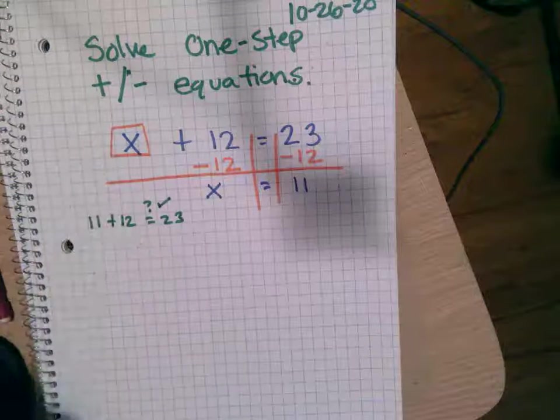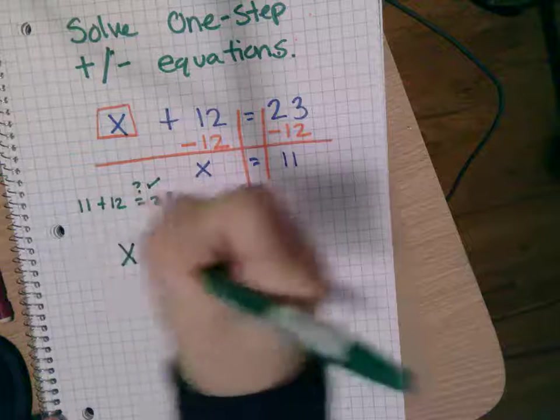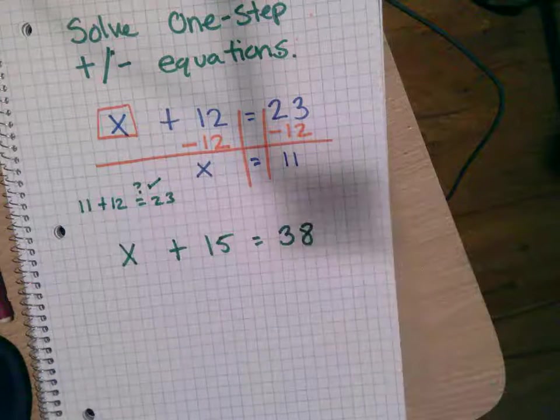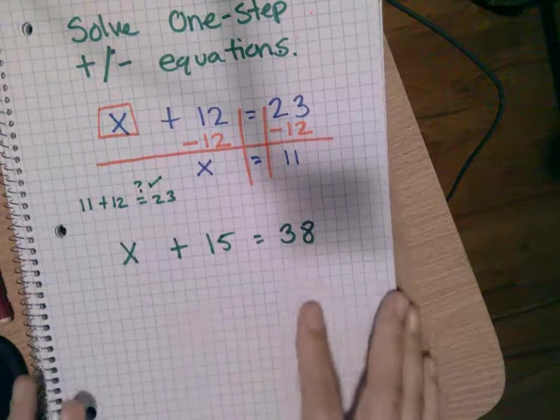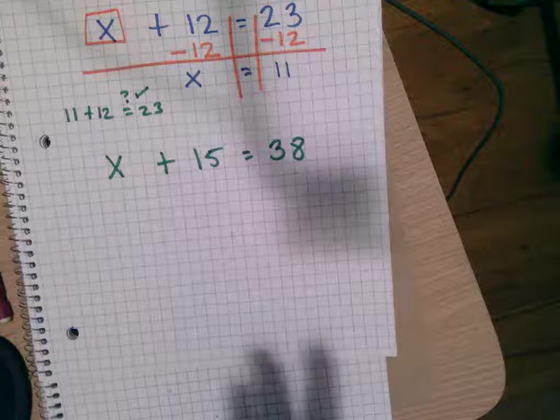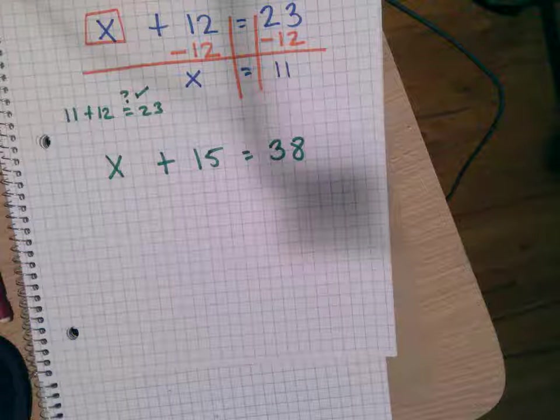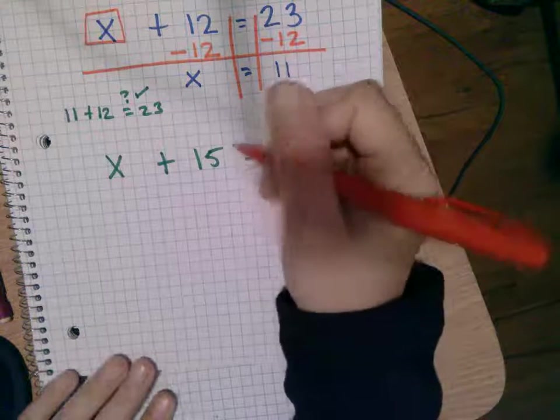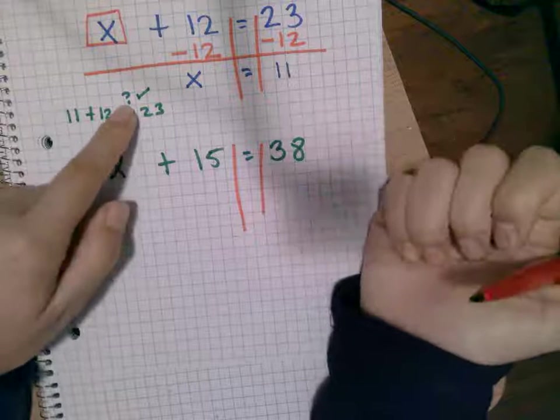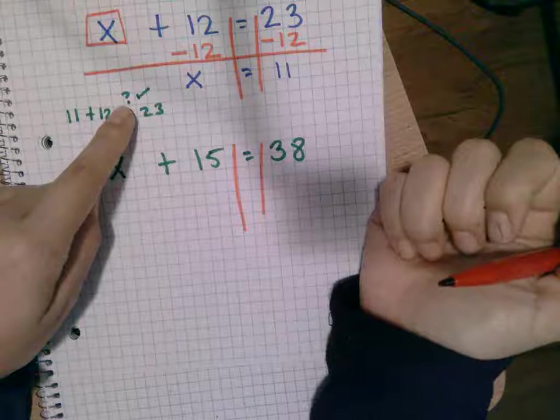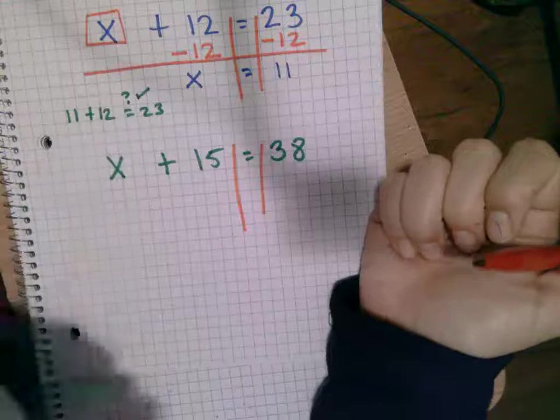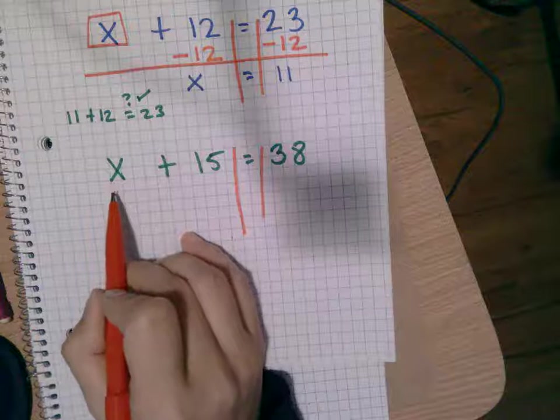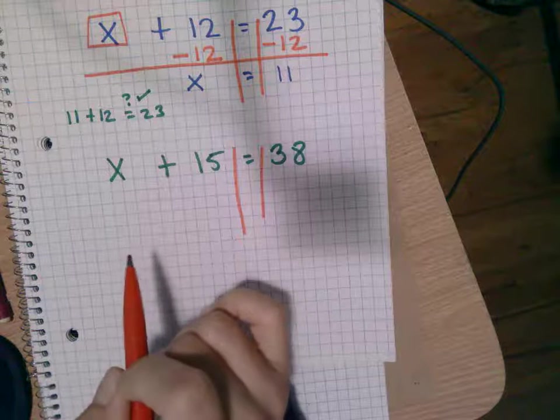Alright, let's try this one. X plus 15 is equal to 38. Some of you can probably do it in your head. Fantastic, but I need you to show it on paper. Now remember, you're taking a picture of these notes later, so make sure you copy everything down. See that question mark there? Copy it down. So I want x by itself. That's your goal to get x all by itself.